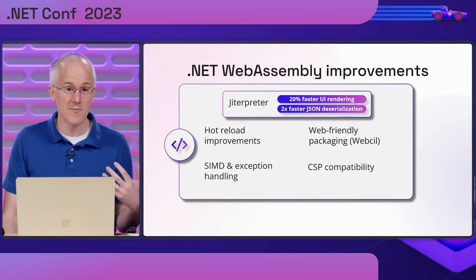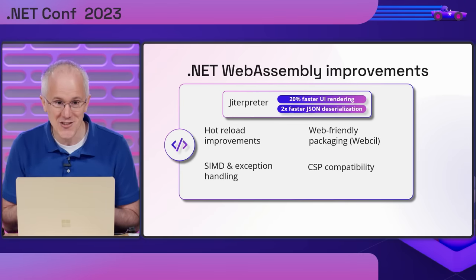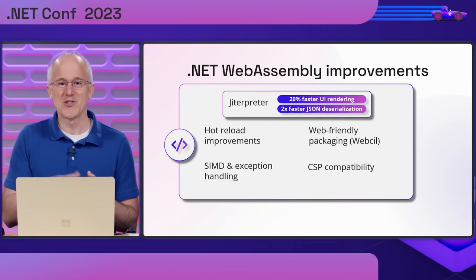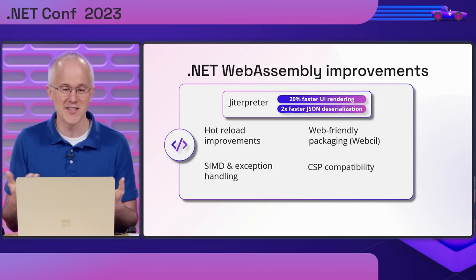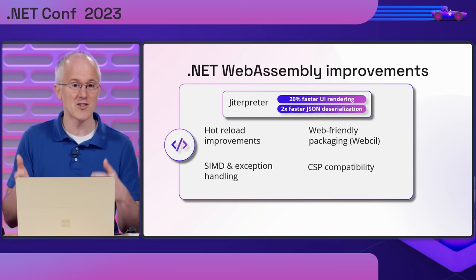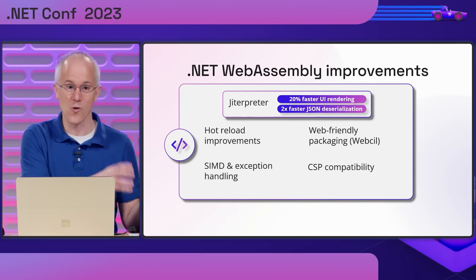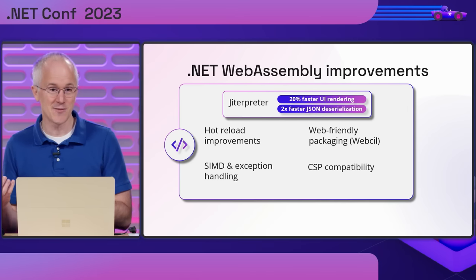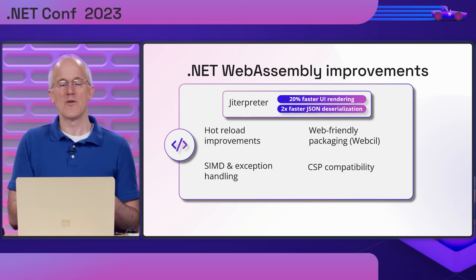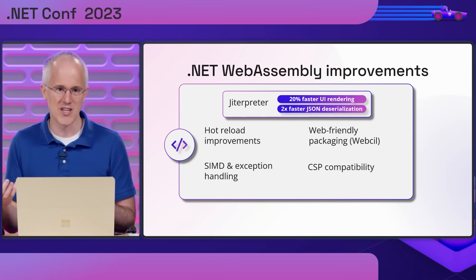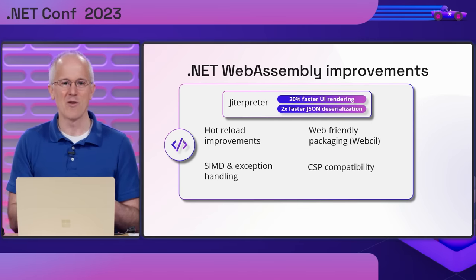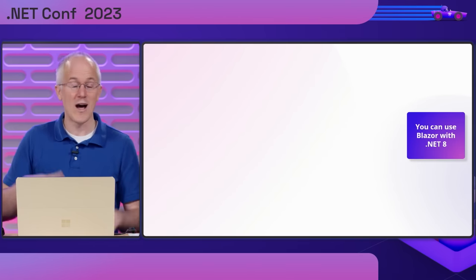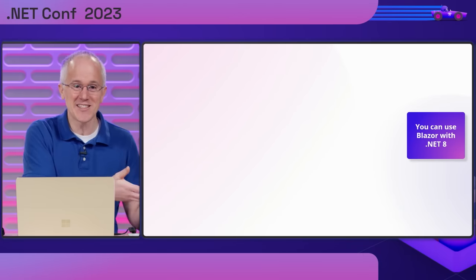.NET on WebAssembly is also significantly improved in .NET 8. Your code runs much faster thanks to a new JIT interpreter-based runtime with partial just-in-time compilation support for WebAssembly — this means your components run 20% faster, and JSON deserialization is twice as fast. Hot reload for WebAssembly is significantly improved, now supporting all the same edit types as the server-based runtime including editing generic types. WebAssembly SIMD and exception handling support are enabled for ahead-of-time compiled Blazor WebAssembly apps so they run much faster. We've introduced a new web-friendly packaging format for .NET WebAssembly apps called Web CIL that makes deployment seamless and painless, and we've improved content security policy compatibility so you can lock down your web apps and make them more secure.